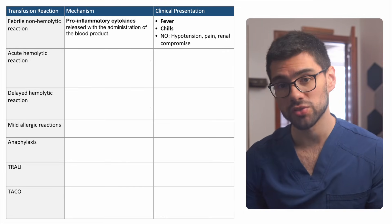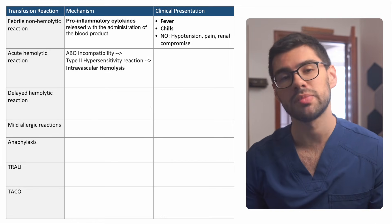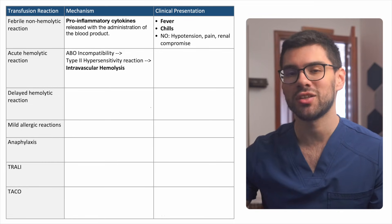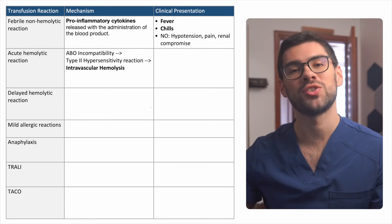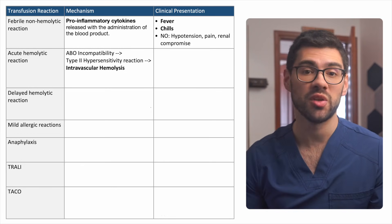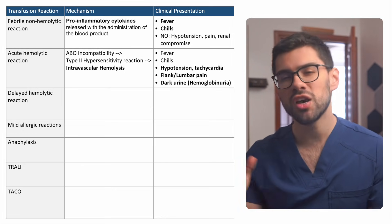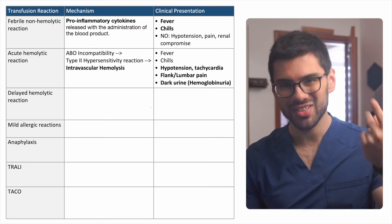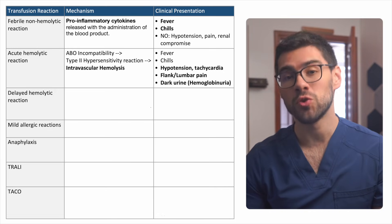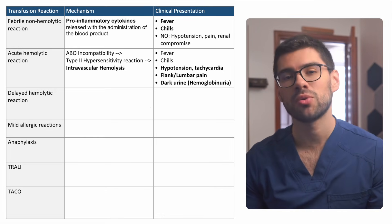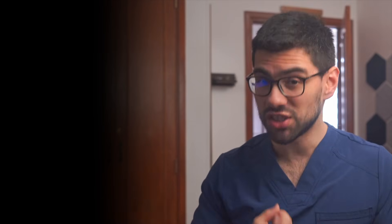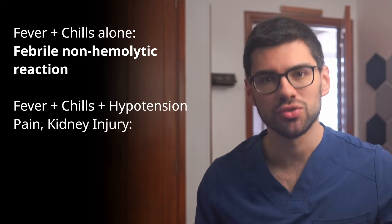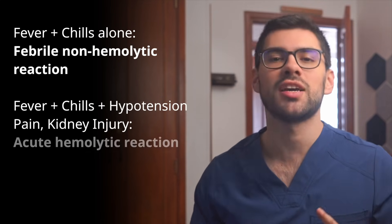Now let's contrast this with an acute hemolytic reaction — this one is a medical emergency. It is caused by ABO incompatibility that leads to a type 2 hypersensitivity reaction where the recipient's antibodies attack donor red blood cells, causing intravascular hemolysis — and the keyword here is intravascular. This usually develops very shortly after the transfusion starts and presents with non-specific signs like fever and chills, but also hypotension, tachycardia, flank or lumbar pain, and dark urine from hemoglobinuria. In severe cases, this can progress to DIC and renal failure. So to recap: just fever and chills is febrile non-hemolytic reaction; fever, chills, plus hypotension, low back pain, and renal compromise is acute hemolytic reaction.